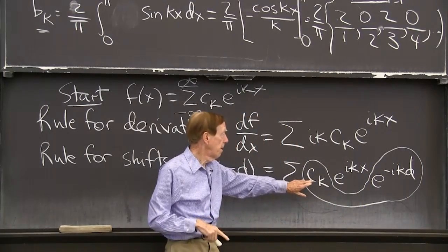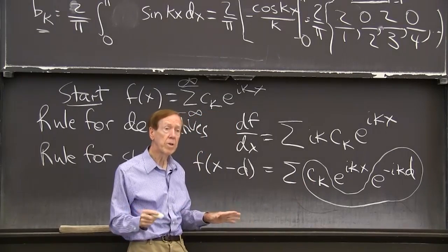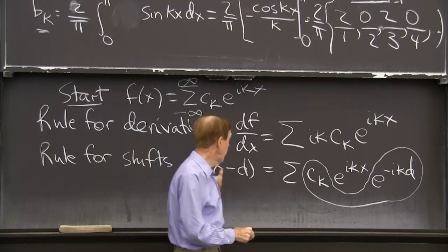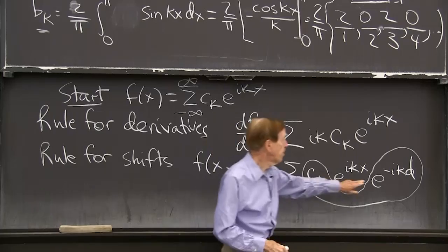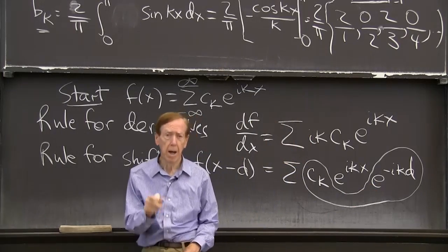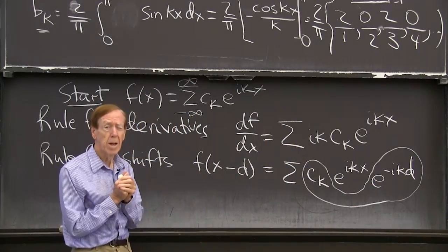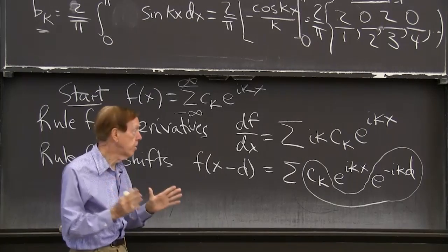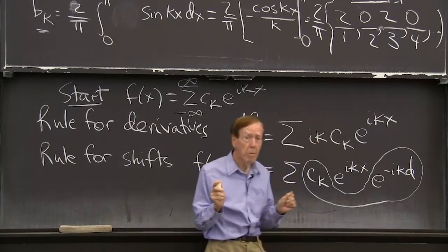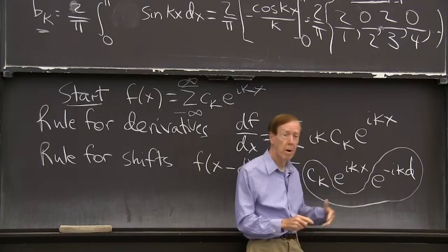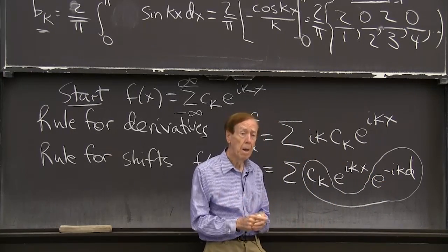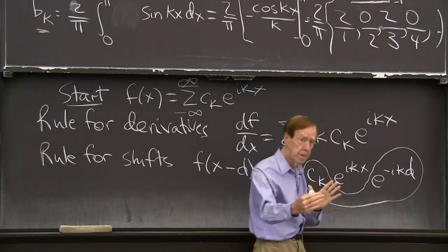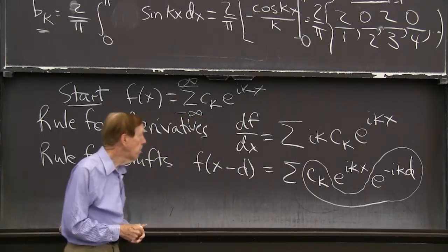And here I see that the Fourier coefficient for a shifted function, so this c_k was a Fourier coefficient for f. When I shift f, it multiplies that coefficient by a phase change. The magnitude stayed the same, because that's a number. Everybody recognizes that as a number of magnitude 1. And just has a phase shift.